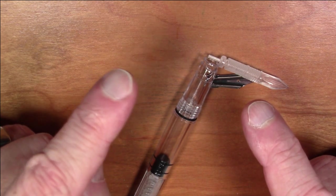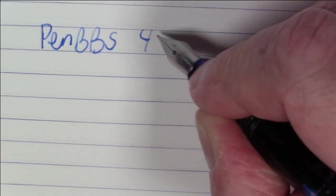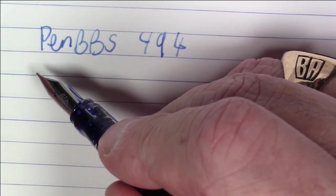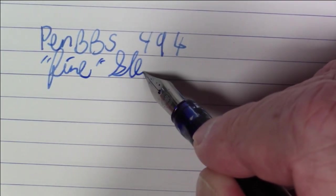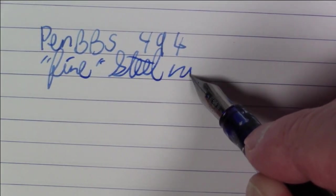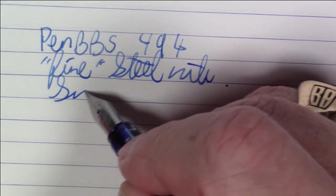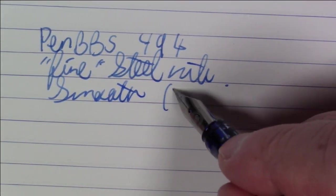Okay folks, what we're writing with here is a PenBBS model 494, and this has a fine steel nib. This writes quite well, so it's smooth, actually I'd even say very smooth.